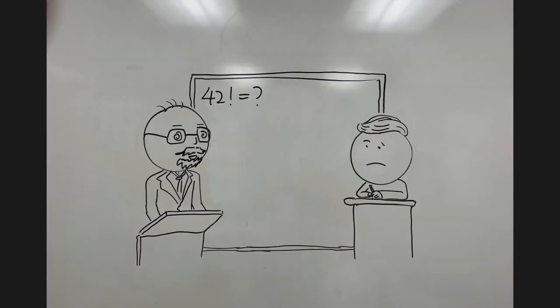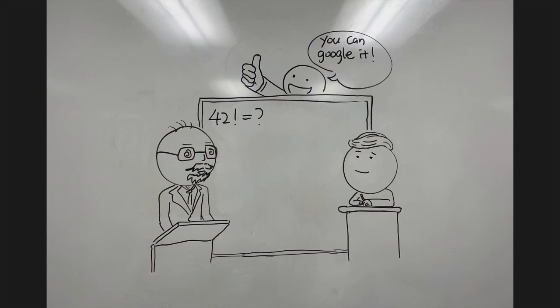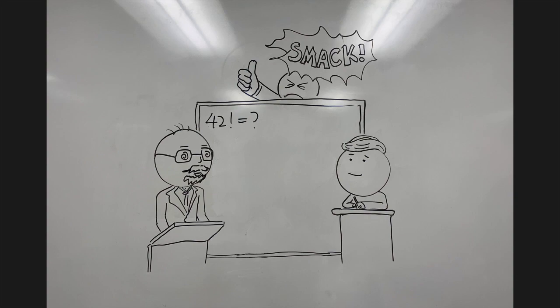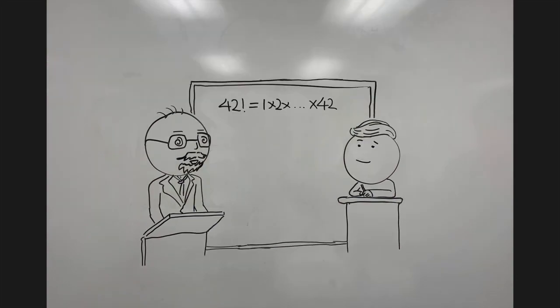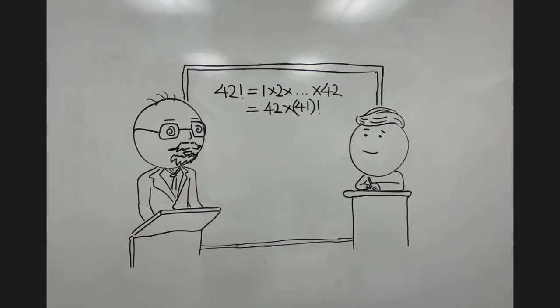Now, what is 42 factorial? Okay, I know that if you Google it, you'll get it right away, but let's not do that here, shall we? We can write 42 factorial as 1 times 2 times 3 all the way up to 42.